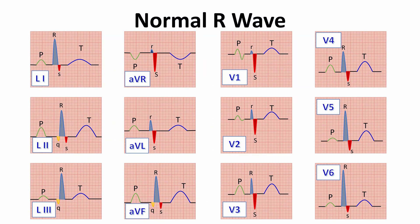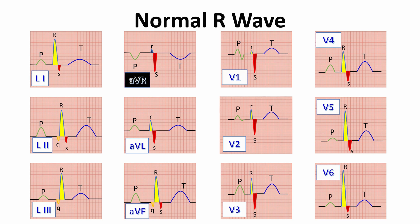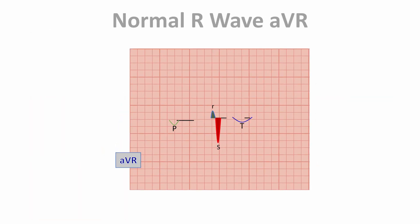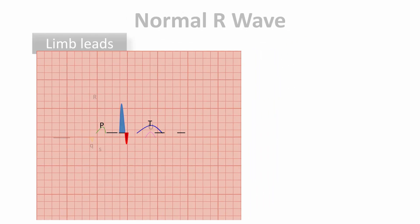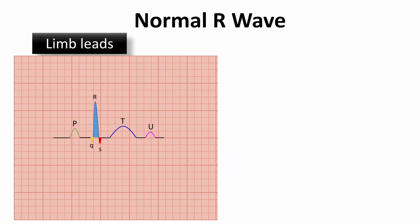As we can see on this ECG paper, the R wave is upright in most leads except in lead aVR, where the P wave and T wave are also inverted, and left ventricular depolarization appears as an S wave in the limb leads.